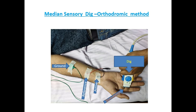Hi everyone, today we will discuss median sensory electrode placement and normal values. The important thing is all participants have nerve conduction study in an air-conditioned room at 26 degrees Celsius, and skin temperature on the hand maintained at 32 degrees Celsius.